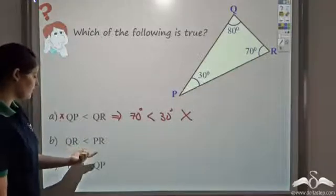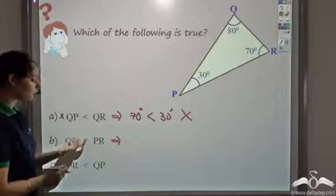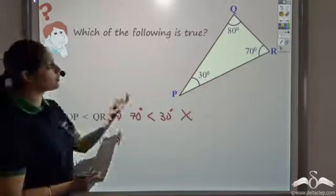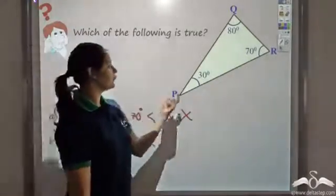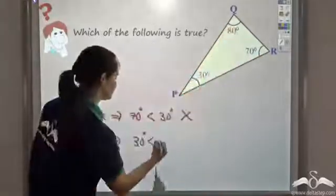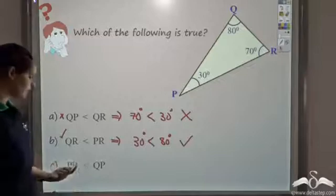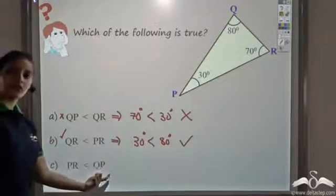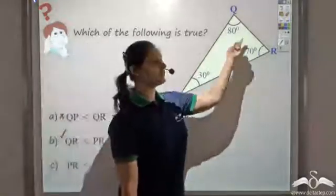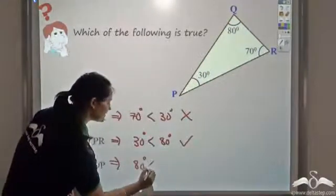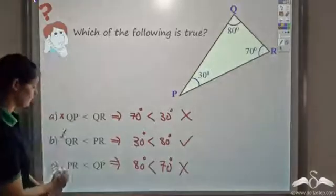Option B says QR is less than PR. If so, the angle opposite to QR — 30 degrees — should be less than the angle opposite to PR — 80 degrees. Since 30 is less than 80, this is correct. Option C says PR is less than QP, meaning the angle opposite to PR — 80 degrees — should be less than the angle opposite to QP — 70 degrees. Since 80 is not less than 70, option C is incorrect.